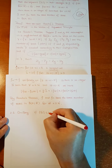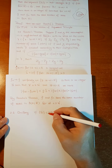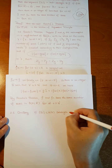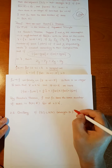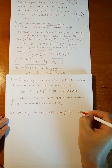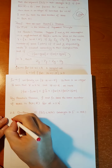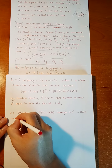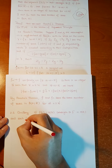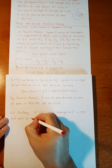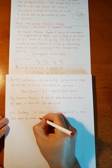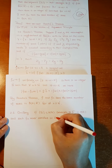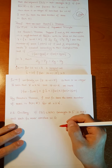Corollary 2.6 says: if f_n is a sequence in H(G) converging to f in H(G) — remember H(G) is closed, so if it converges it will be in H(G) — and each f_n never vanishes on G.